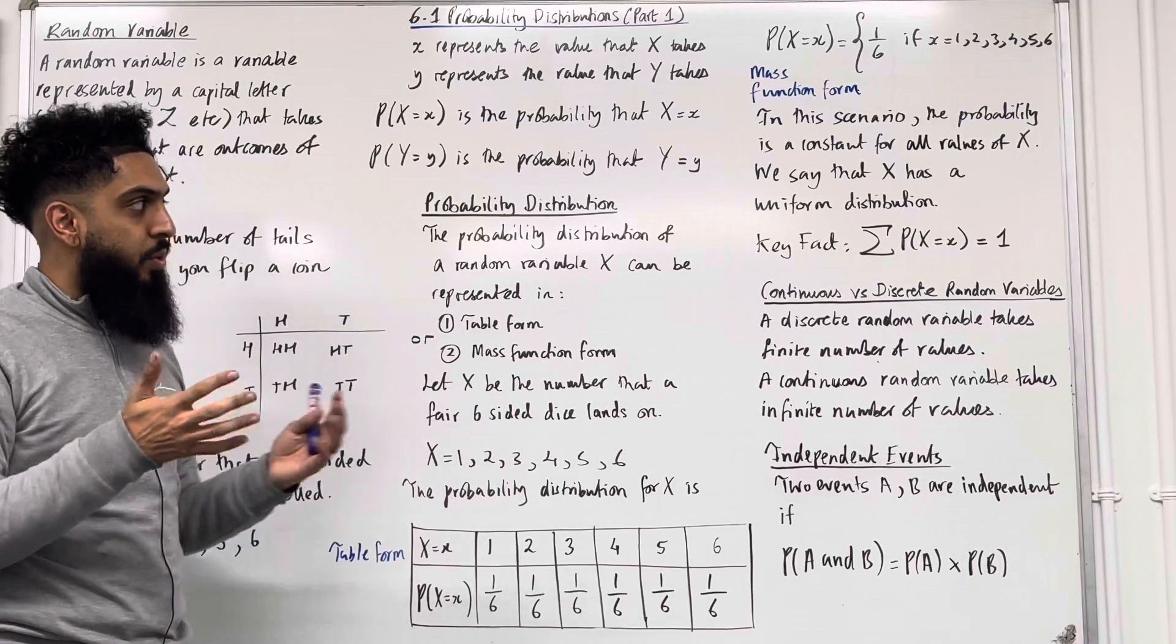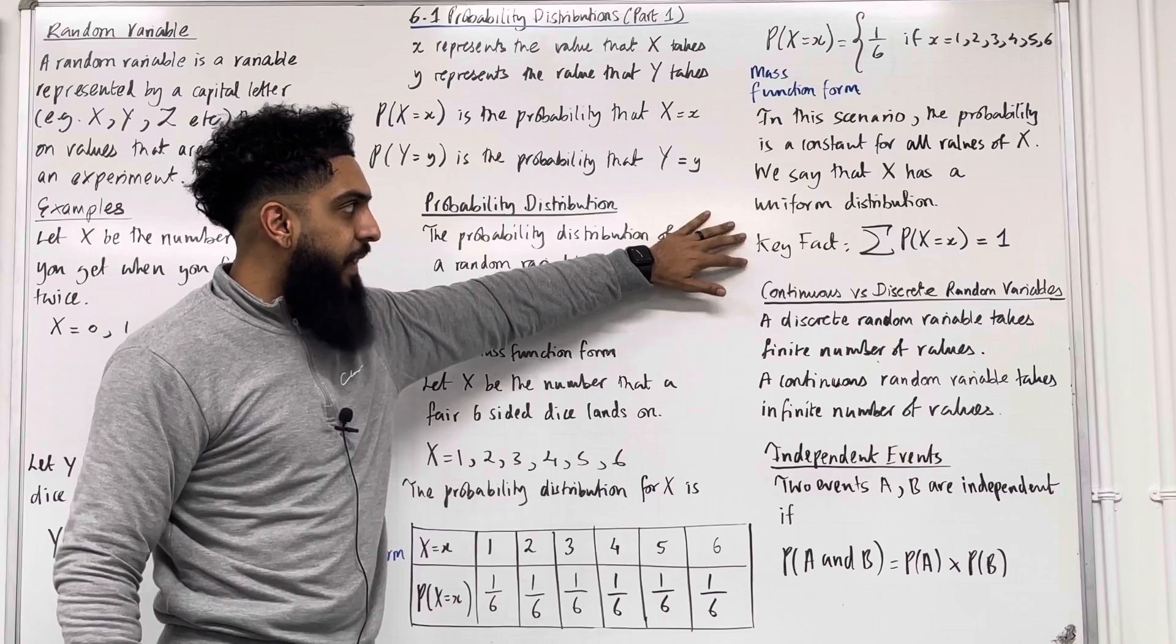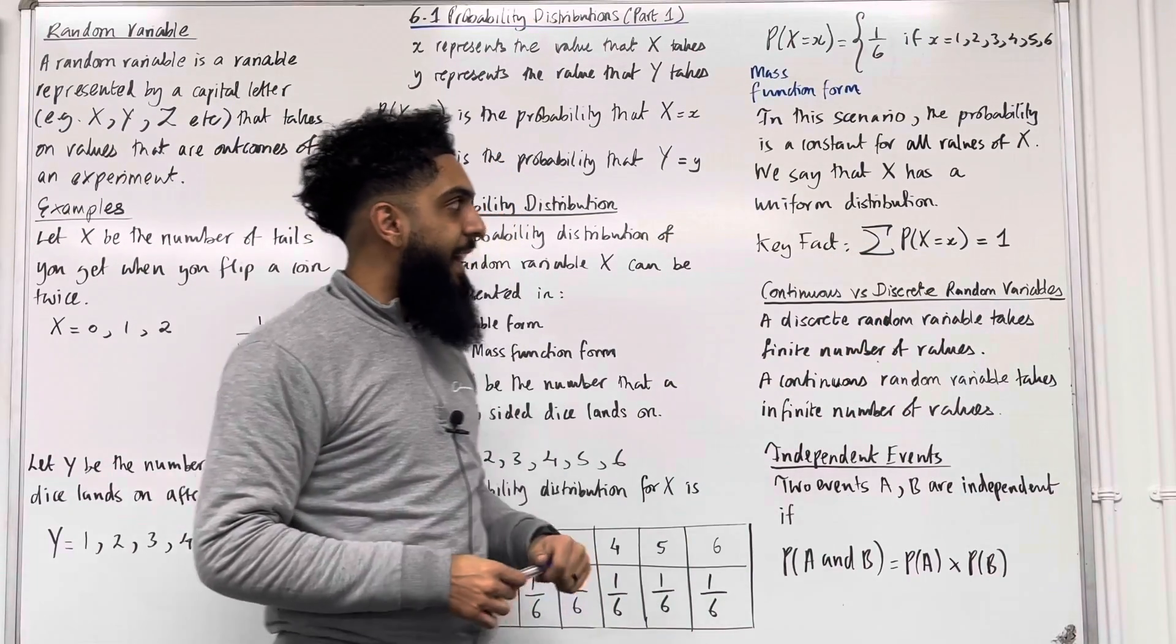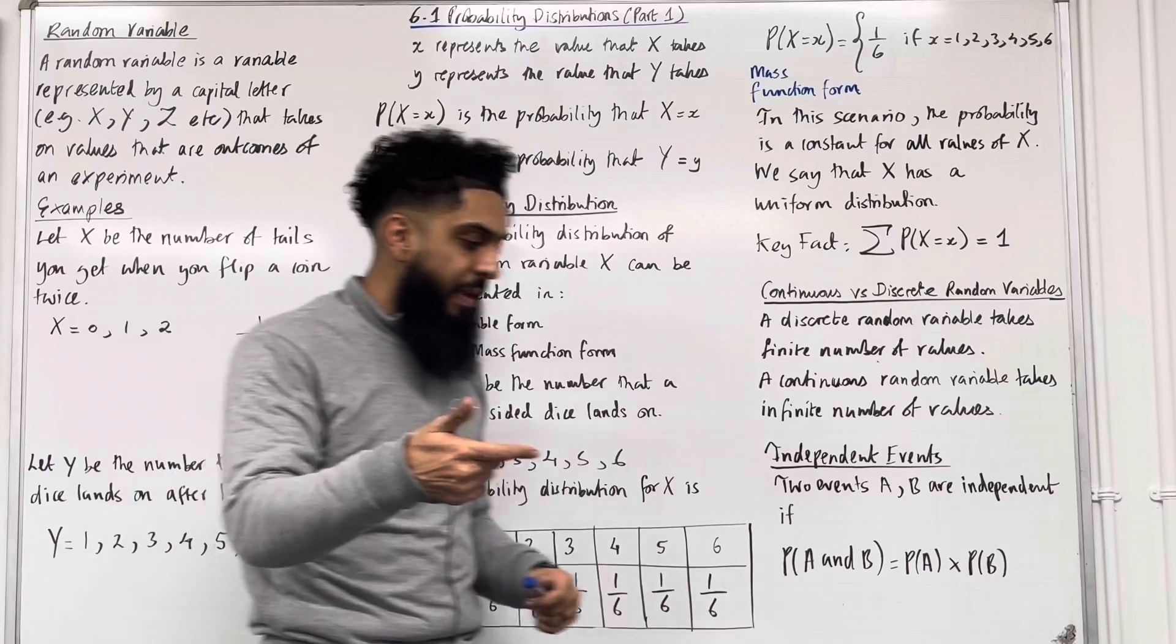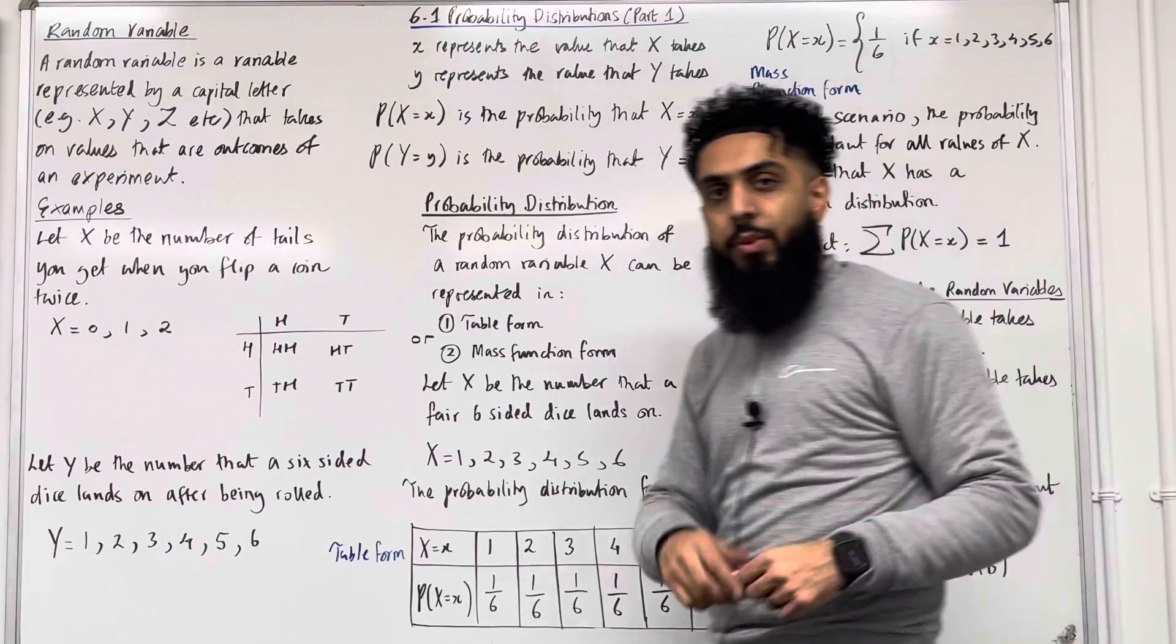It has a special type of distribution. Now from GCSE we know this key fact: the sum of probability P(X = x) is equal to 1. Probabilities add up to 1. Okay, now let's focus on continuous versus discrete random variables.